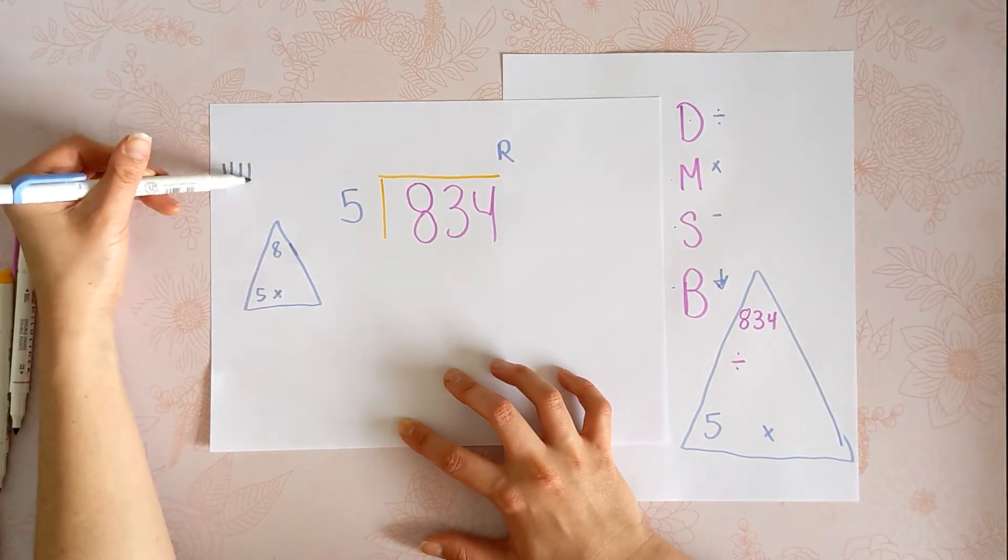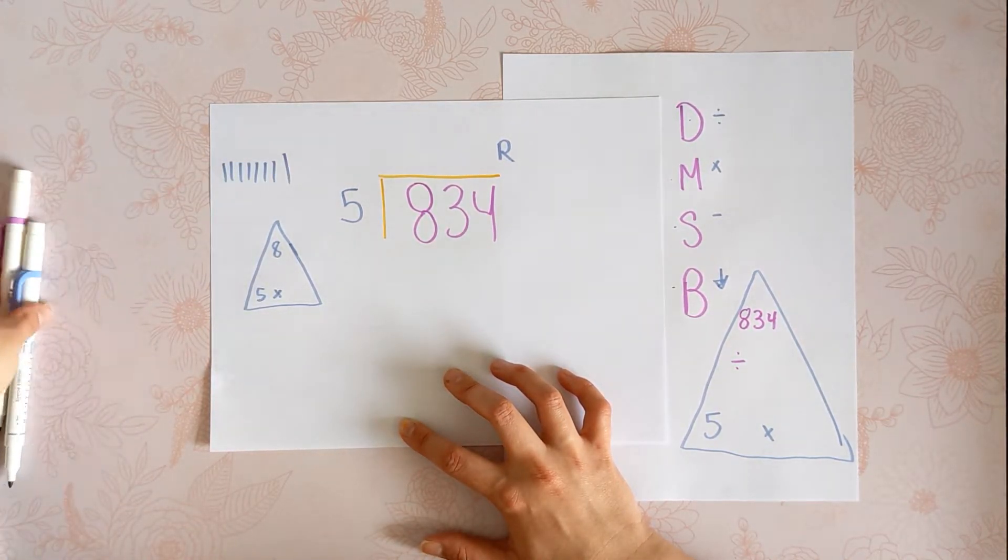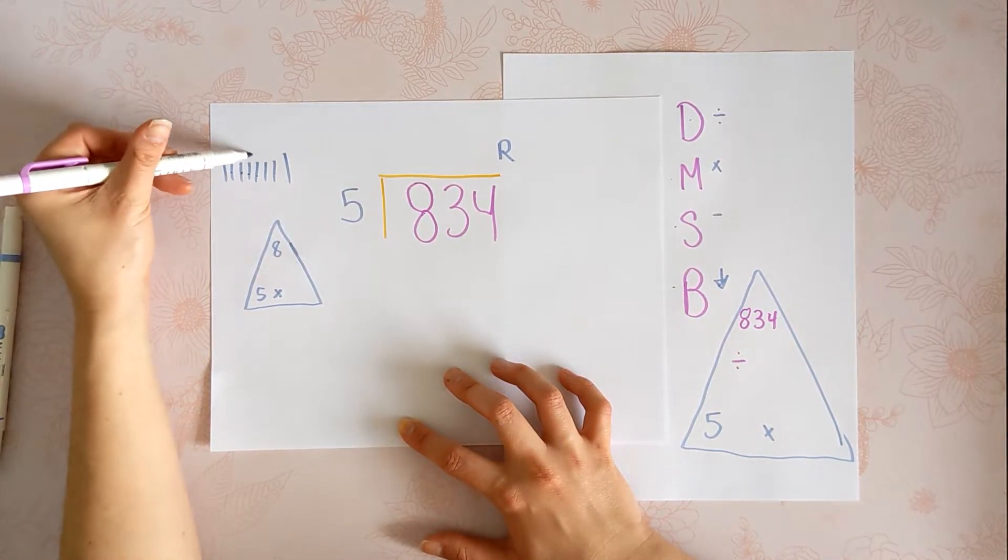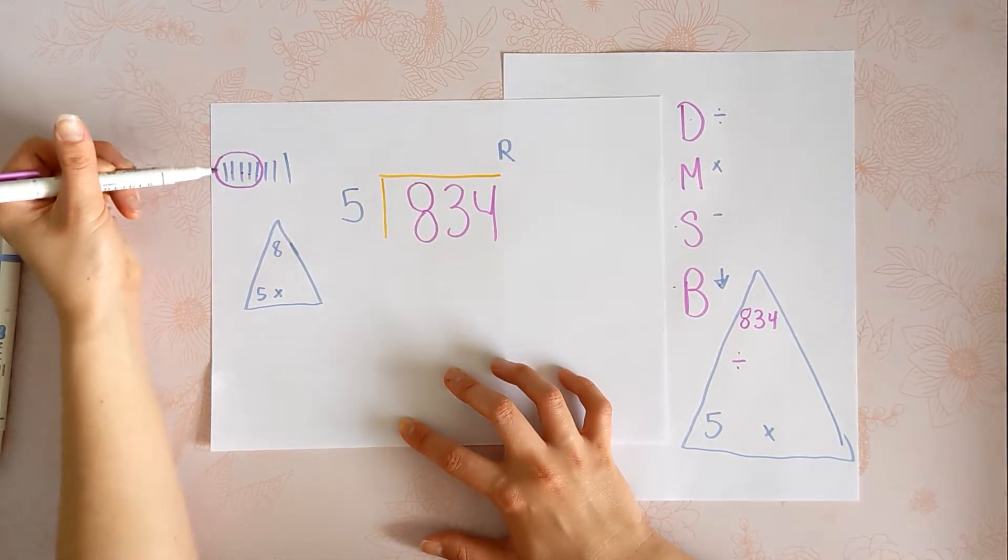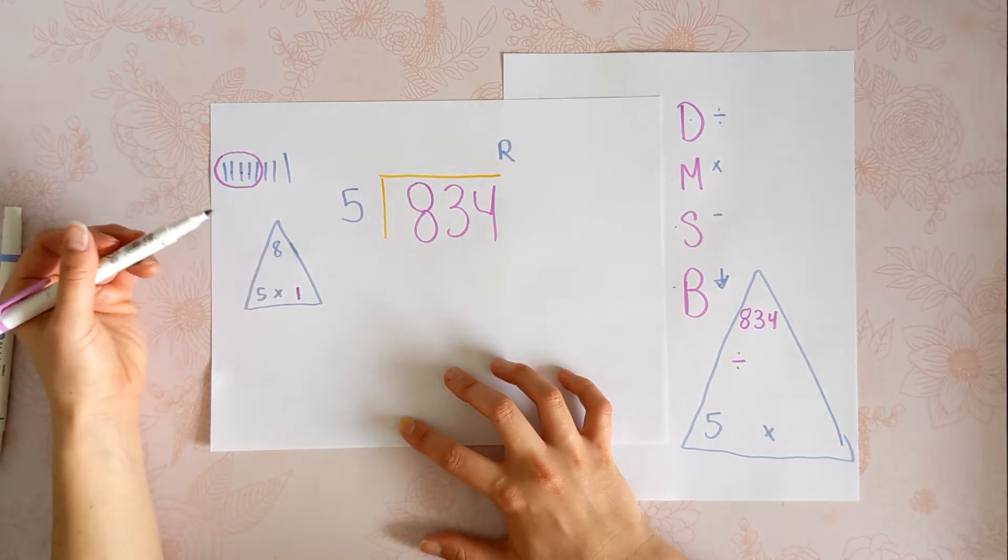So if I have 1, 2, 3, 4, 5, 6, 7, 8, I can only make 1, 2, 3, 4, 5, one group of 5. So 5 fits into 8 one time.